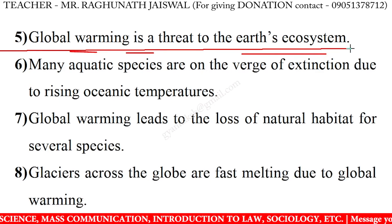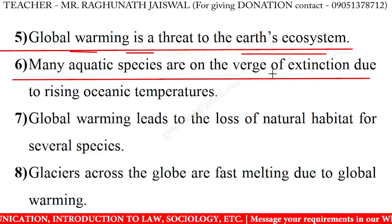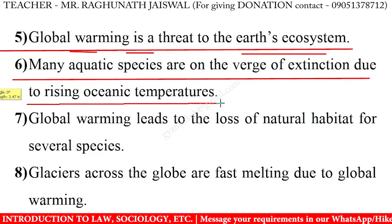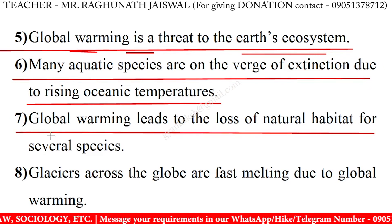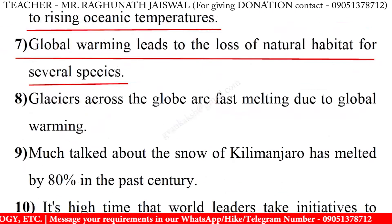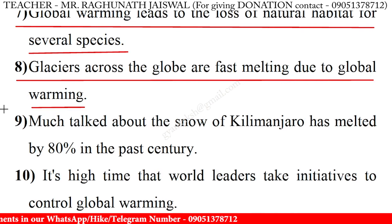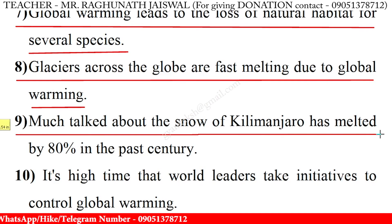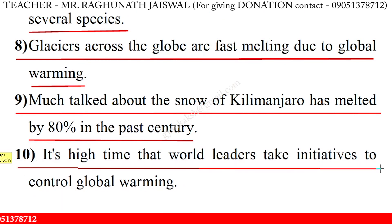Global warming is a threat to the Earth's ecosystem. Many aquatic species are on the verge of extinction due to rising oceanic temperatures. Global warming leads to the loss of natural habitat for several species. Glaciers across the globe are fast melting due to global warming. Much talked about, the snow of Kilimanjaro has melted by 80% in the past century. It's high time that world leaders take initiative to control global warming.